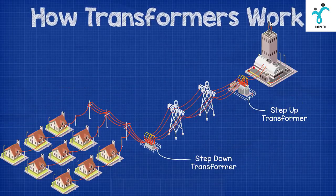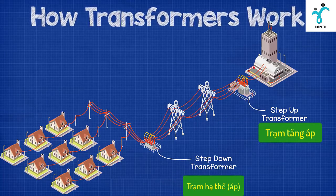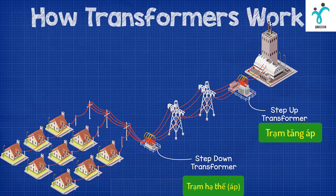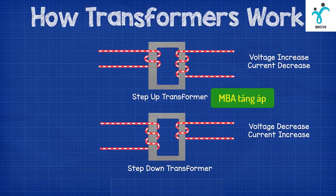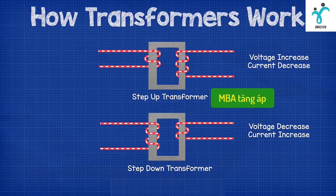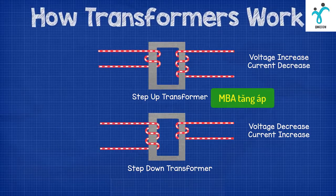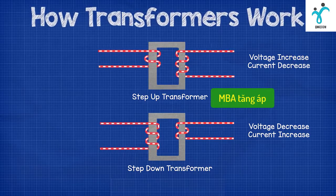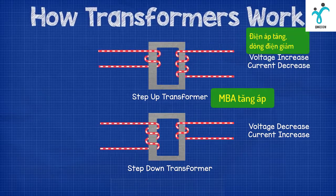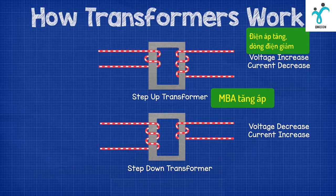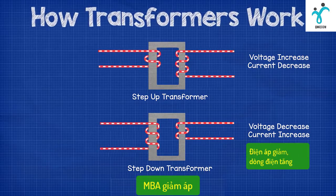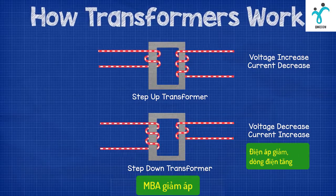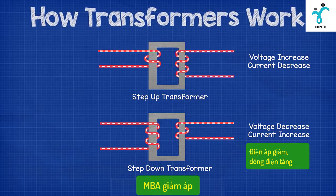Transformers are manufactured to be step up or step down transformers, and these are used to increase or decrease the voltage simply by using a different number of turns within the coil on the secondary side. In a step up transformer the voltage is increased in the secondary coil, which means that the current will decrease. To increase the voltage we just need to add more turns to the coil on the secondary side than the primary side. In a step down transformer the voltage is decreased, which means the current increases, and we use fewer turns on the secondary side.